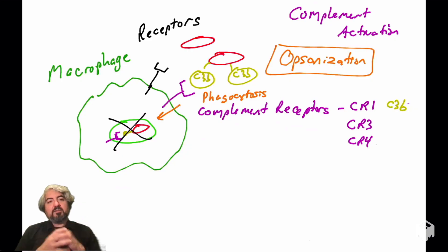Again, affixing complement to the surface of a pathogen will trigger the phagocytosis of that pathogen. That is called opsonization. That is one effector mechanism by which complement activation can lead to the destruction of pathogens.